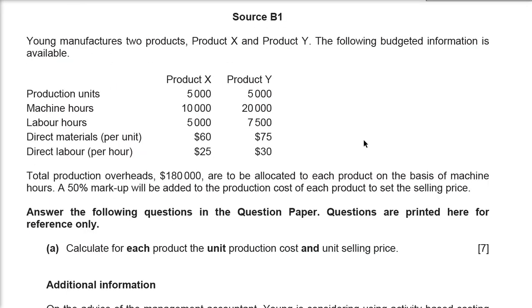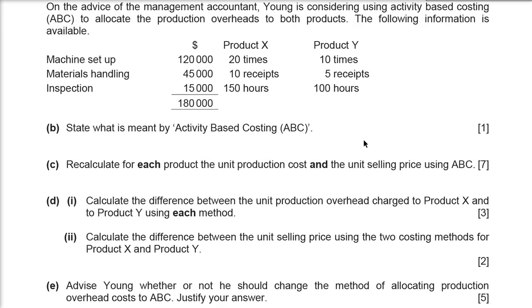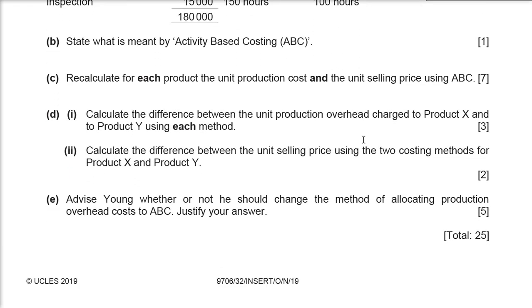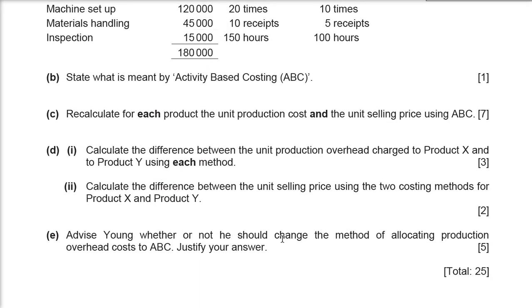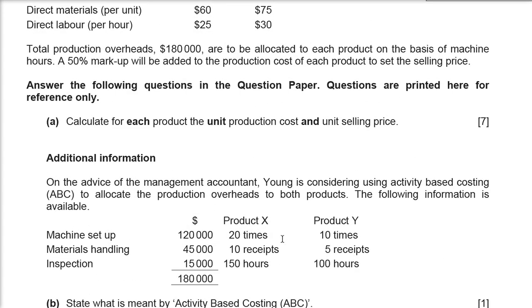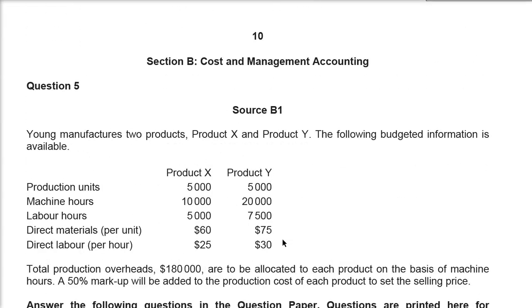B1 question is from October/November 19, paper 32. They are asking which method — overheads question or ABC question, mixed. Either this overheads question or the ABC question would come.